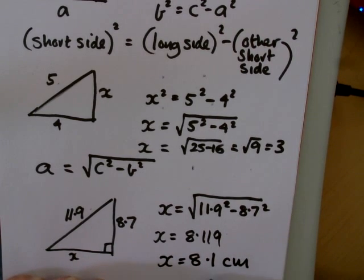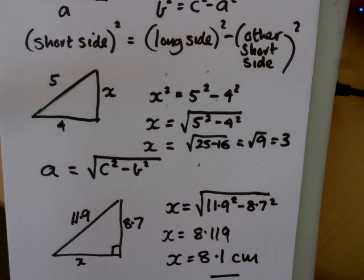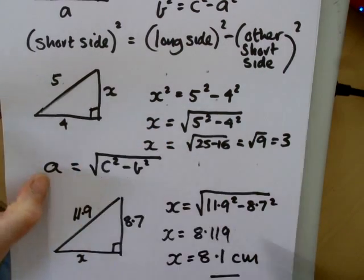And put the unit in, although that's normally written down for you in the exam. So that's the application of Pythagoras rule to find the short side in a right-angled triangle. I hope you've understood.